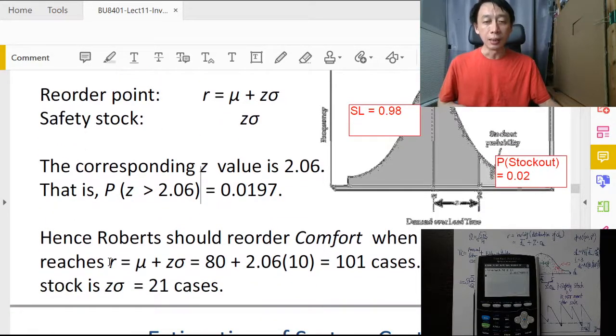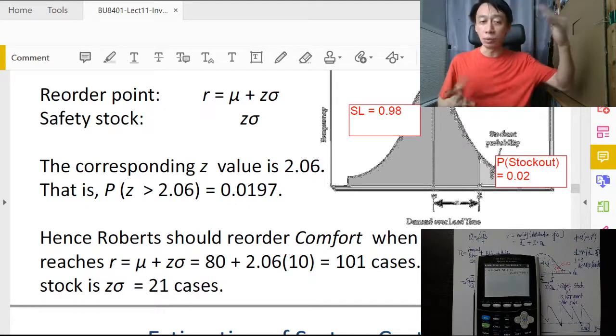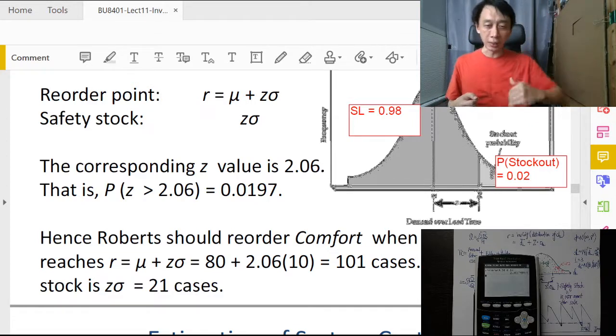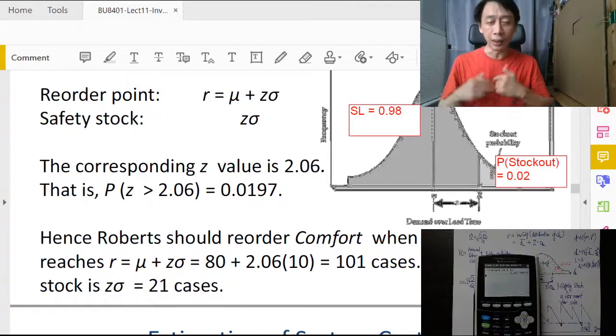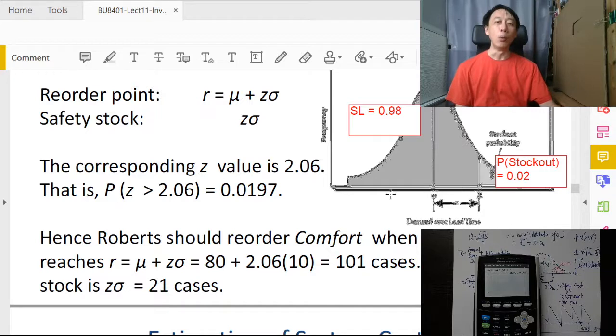Substituting in, we get the reorder point being 80 plus 2.06 times 10, so we get 101 cases. So if we still have 103 cases in our warehouse, we don't order. If we buy another 10, then yes, we cross the 101 line and we should reorder by calling out the supplier.